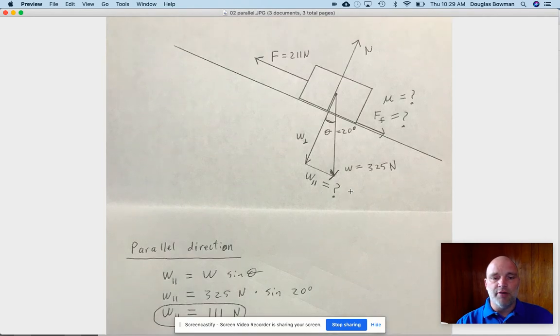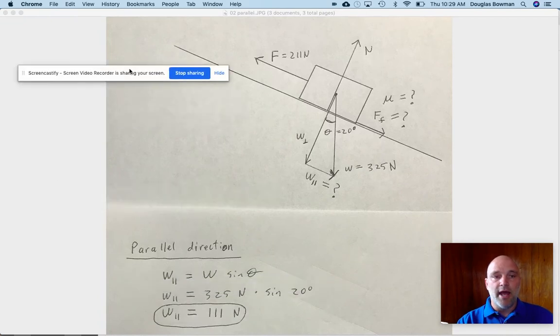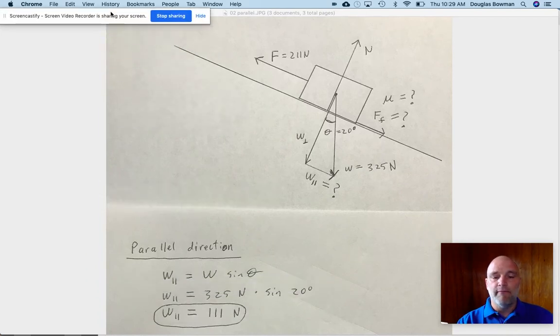So you can see here, I've gone ahead to do that. In the parallel direction, what is the parallel component of the weight? Well, in this triangle that we've drawn, this interior angle is theta, and the opposite side, so we're going to use sine, is W parallel. So W parallel equals W sine theta. And when we plug in the values, we find out that W parallel is 111 Newtons.